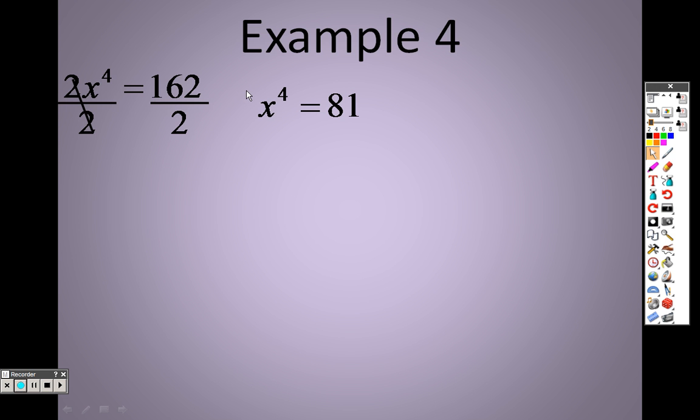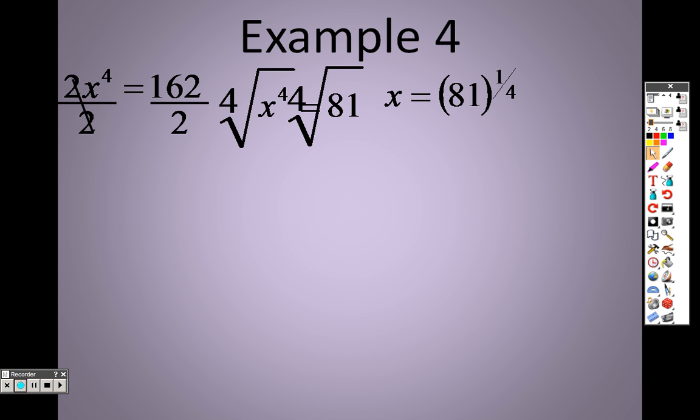But the other way to think about it is instead of writing it as the 4th root, which is correct, I could take the 4th root of both. But the 4th root we could also rewrite as 1/4, remember? So really what I'm asking you to do in your calculator is, what's 81 to the 1/4 power? So you would type in 81 caret sign parentheses 1 divided by 4.